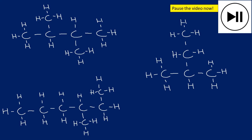Now there are a few for you to try. I suggest you pause the video and draw these out, then unpause to see the answers. For the top-left example: there are four carbons in a line — one, two, three, four. There's a methyl group on the second carbon and a methyl group on the third carbon. That's the skeletal formula for the first one.